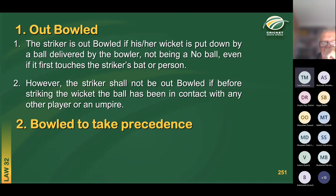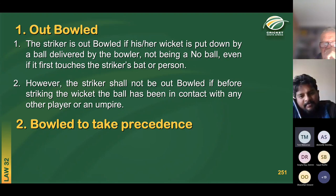However, the striker shall not be out bowled if before striking the ball has been in contact with any other player or an umpire. So the ball has to go from the bowler's hand to the wickets. It can go via the striker's bat or person, but not via any other person on the field.